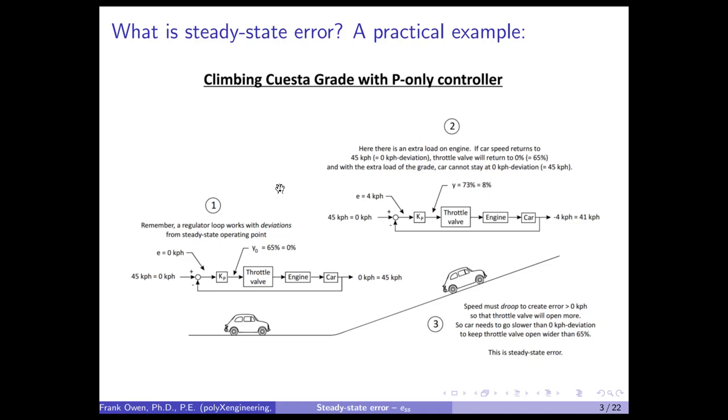I'm going to use initially a regulator loop to describe this, but the explanation is simpler with a positioner loop, which I'll give also. To start, we have a little car, an old Fiat 500, which certainly would not have cruise control, but we'll pretend it does. This car does not go very fast.